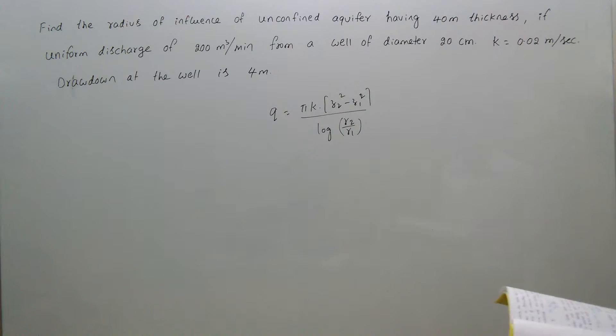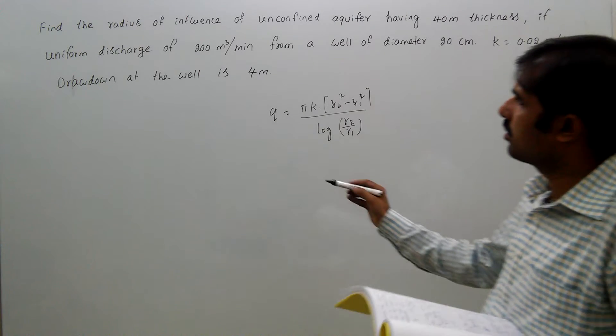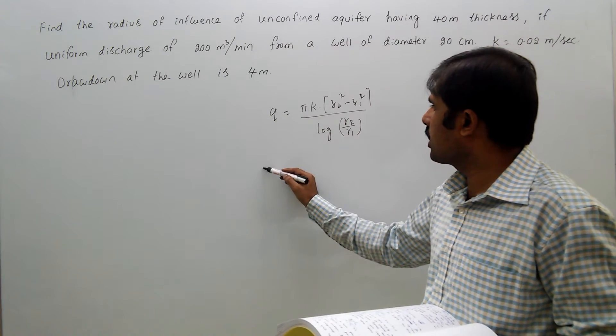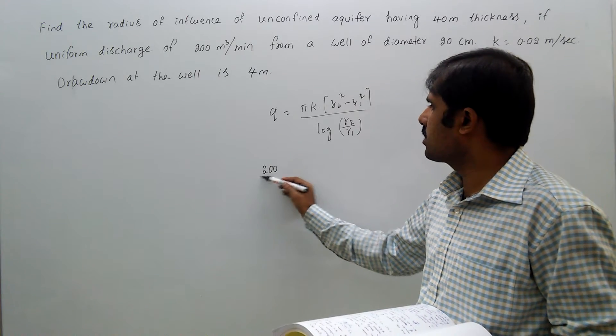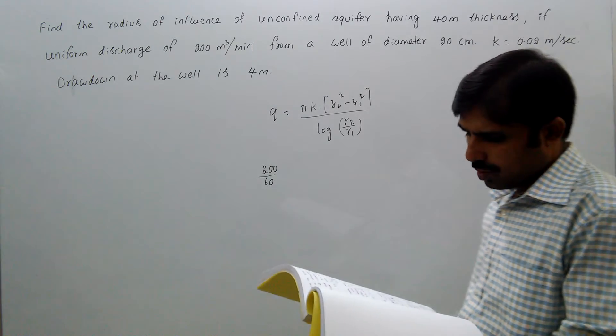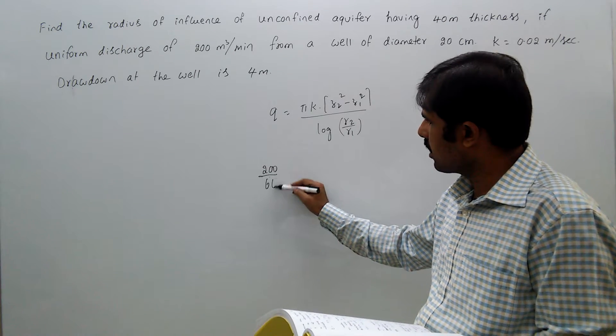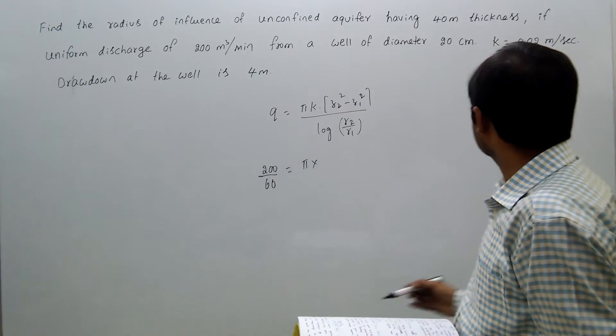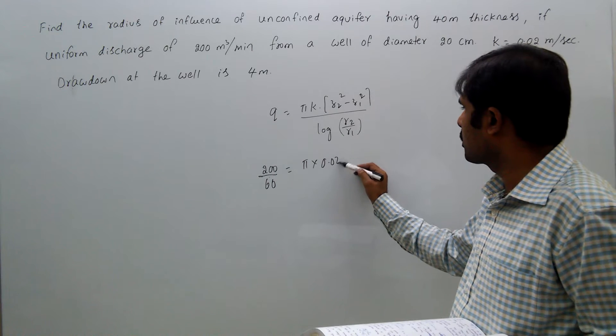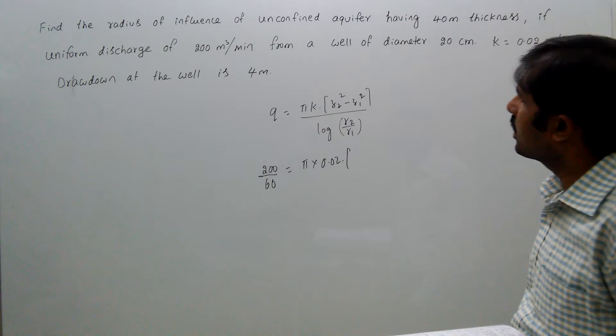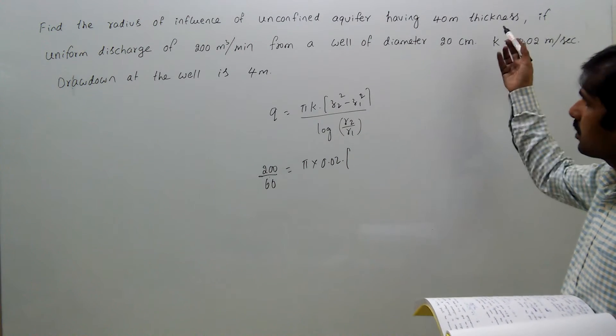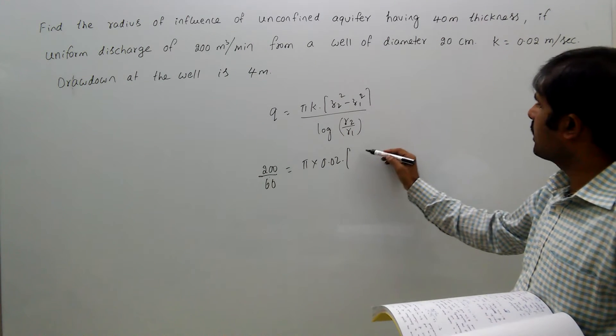Given q equals 200 meter cube per minute, that means 200 divided by 60 per second. So 200 by 60 equals pi times k, which is 0.02, times z2. That's the total depth of the unconfined aquifer, the saturated thickness, which is 40 meters.